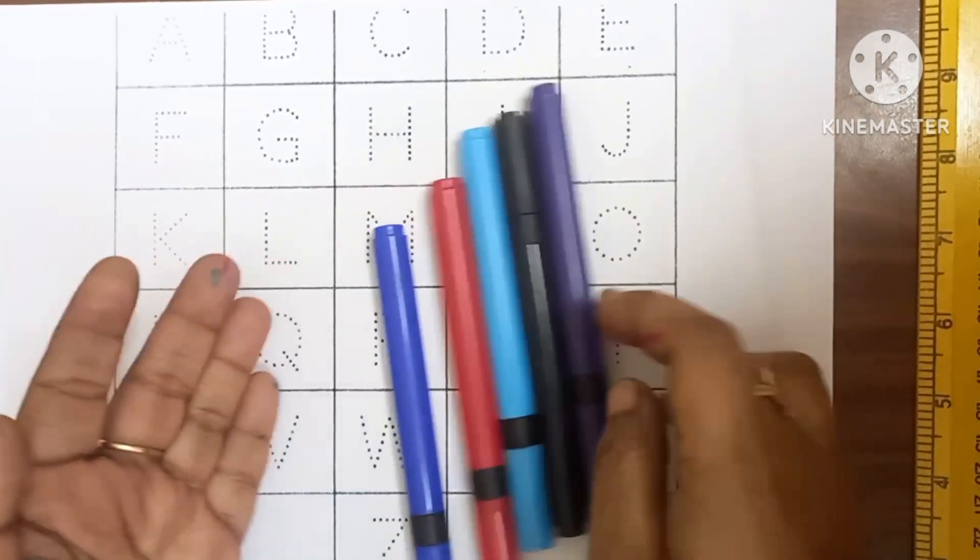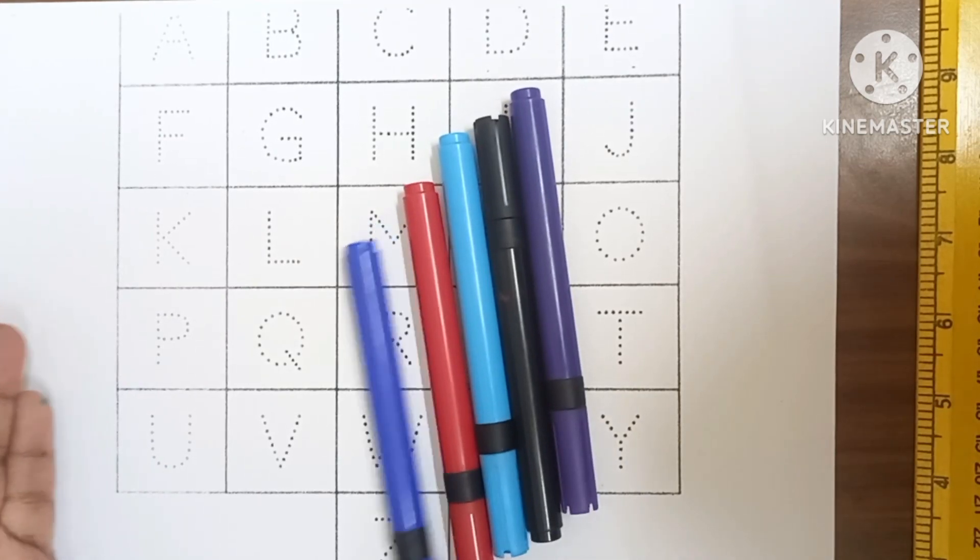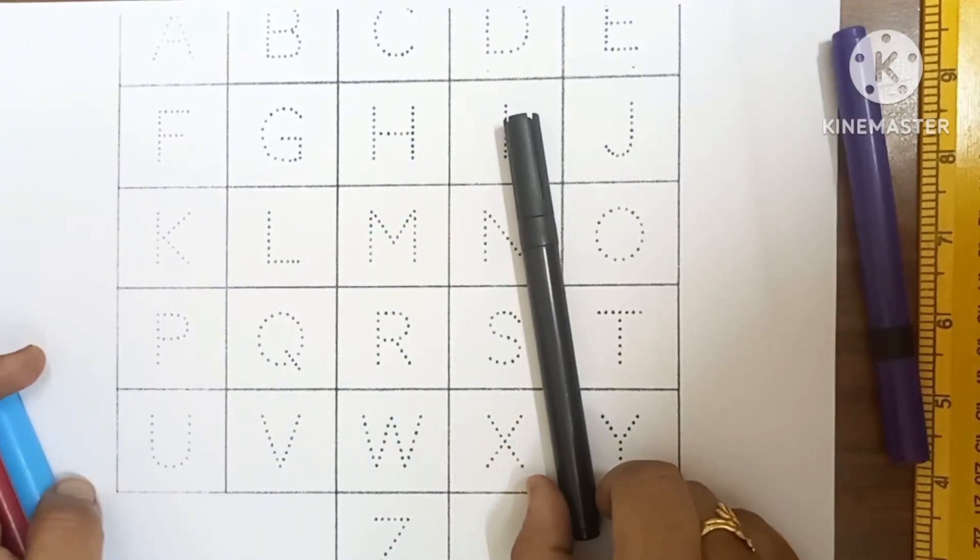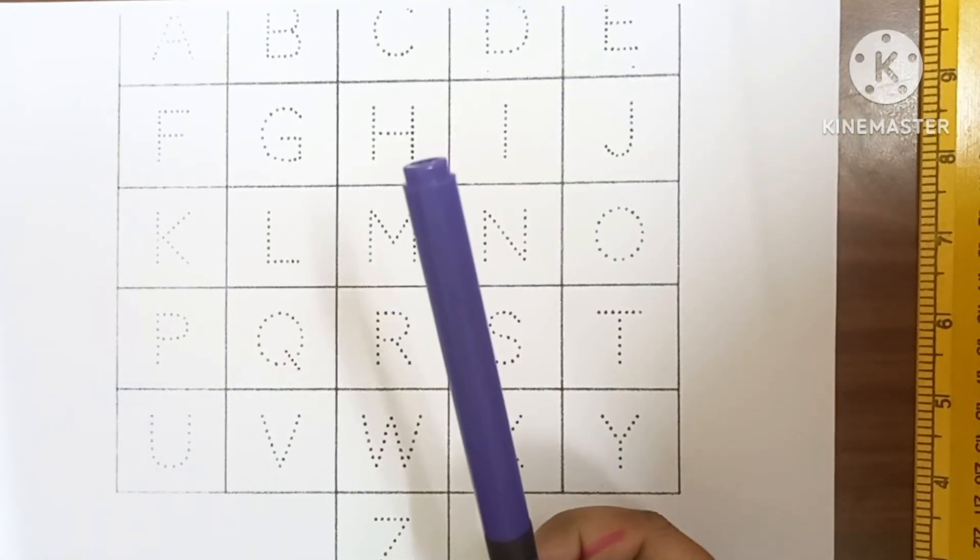Colors. Color names: blue color, red color, sky blue color, black color, and purple color.